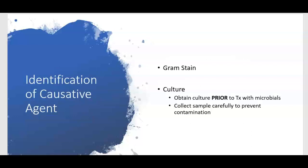When selecting an antibiotic, three principal factors must be considered: the identity of the causative agent, the sensitivity of the infecting organism to an antimicrobial, and other factors including location of infection, age, allergies, and immune status of the host. Laboratory testing of body fluids such as blood, urine, sputum, and wound drainage identifies the microorganism causing the infection.